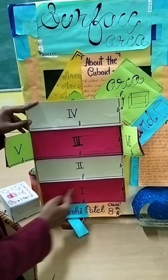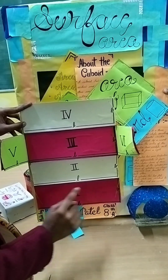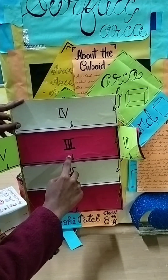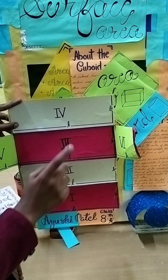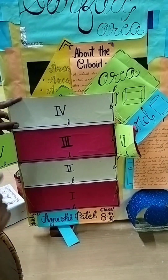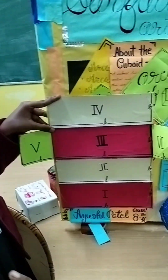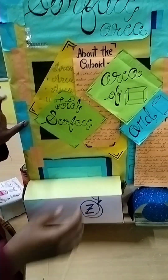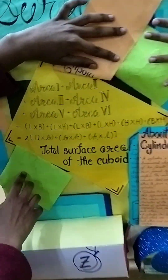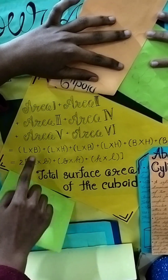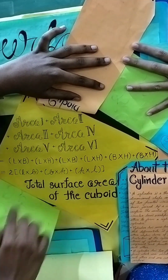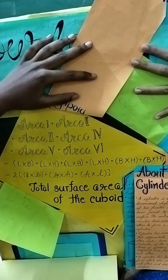We find the area of the first face: length × height. Plus area of second face: length × breadth. Plus area of third face: length × height. Plus area of fourth face: length × breadth. Plus area of fifth face: height × breadth. Plus area of sixth face: breadth × breadth. All of them are added. So the total surface area of the cuboid is equal to 2[lb + bh + hl]. This is the total surface area of the cuboid.